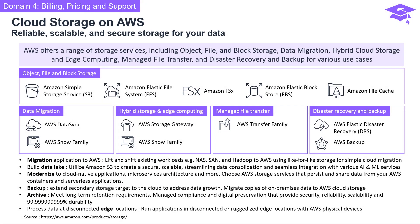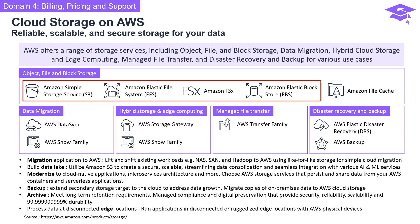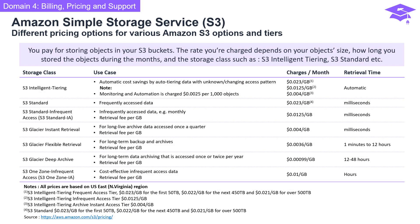AWS offers a range of storage services including Amazon Simple Storage Service (S3), Amazon Elastic File System (EFS), and Amazon Elastic Block Store (EBS). For Amazon S3, you pay for storing objects in your S3 buckets, and the charges depend on factors like object size, duration of storage, and the chosen storage class.